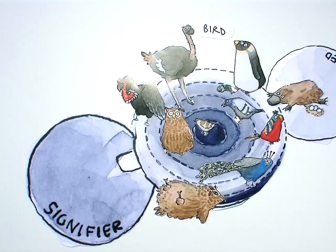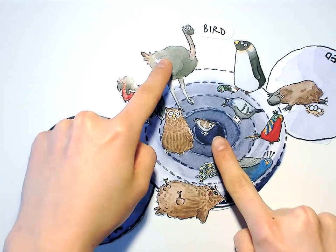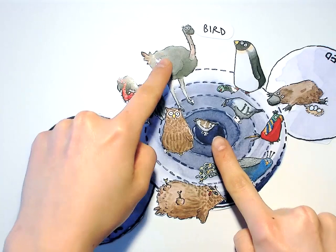Prototype theory also describes family resemblance. The member of the category sharing most features with other members of the category bears highest family resemblance and is close to the prototype.